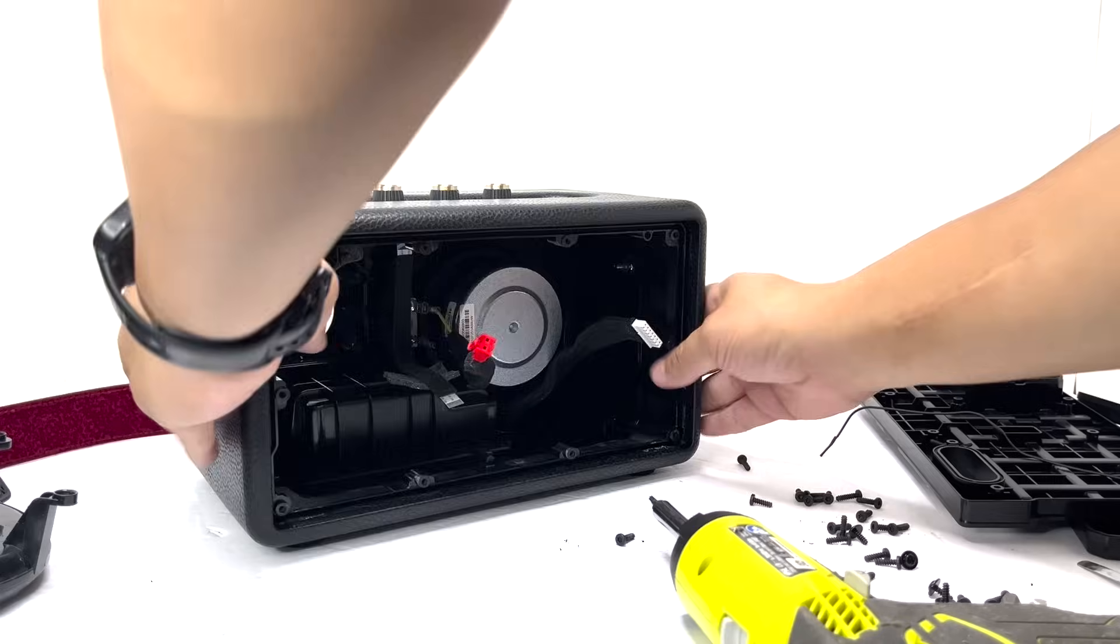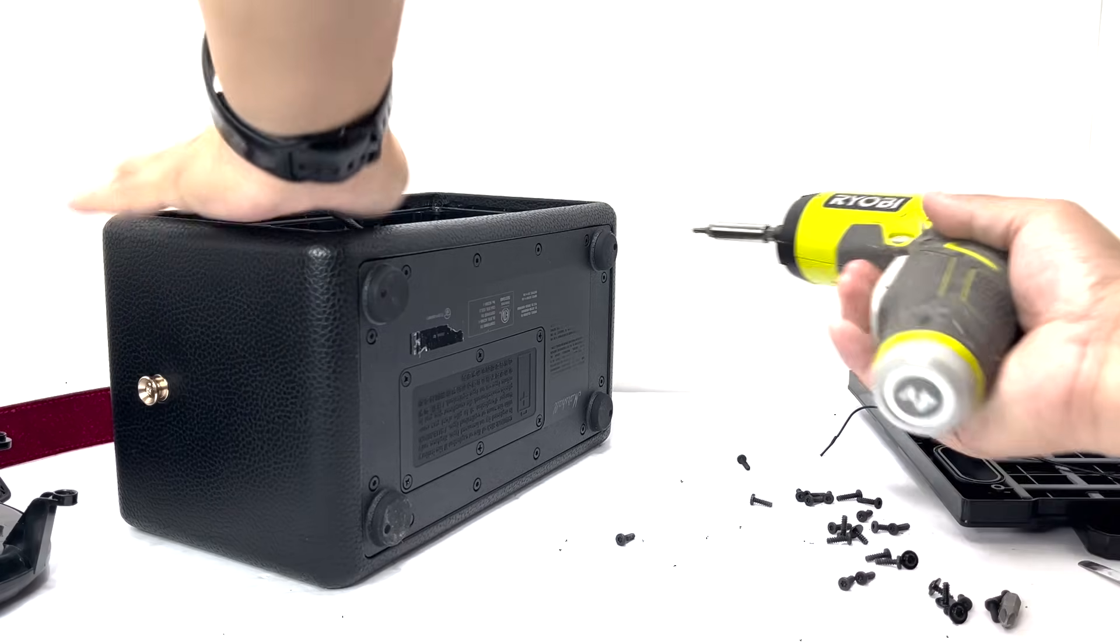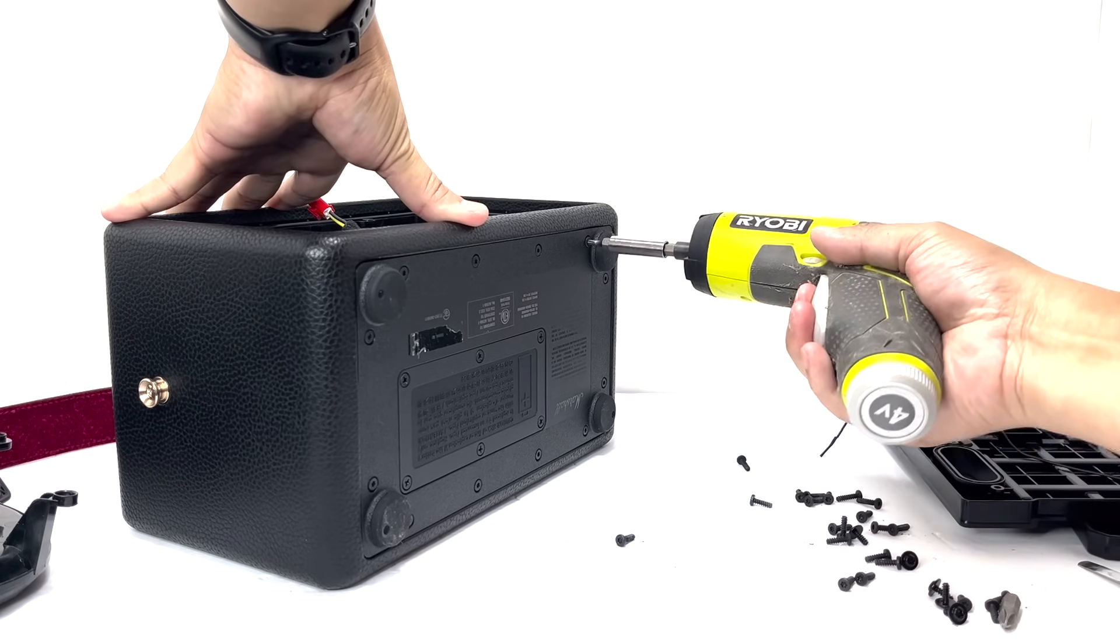Now we'll flip the speaker over to reach the bottom panel. We will remove 12 screws to detach the panel, followed by 6 screws to uncover the battery compartment.